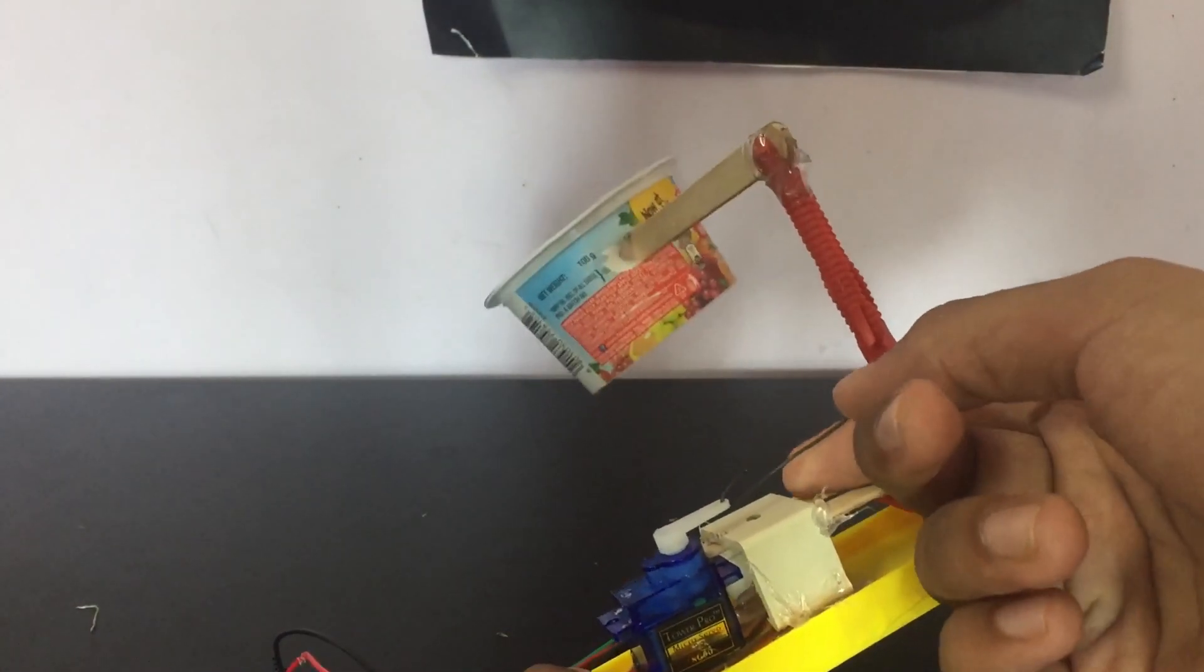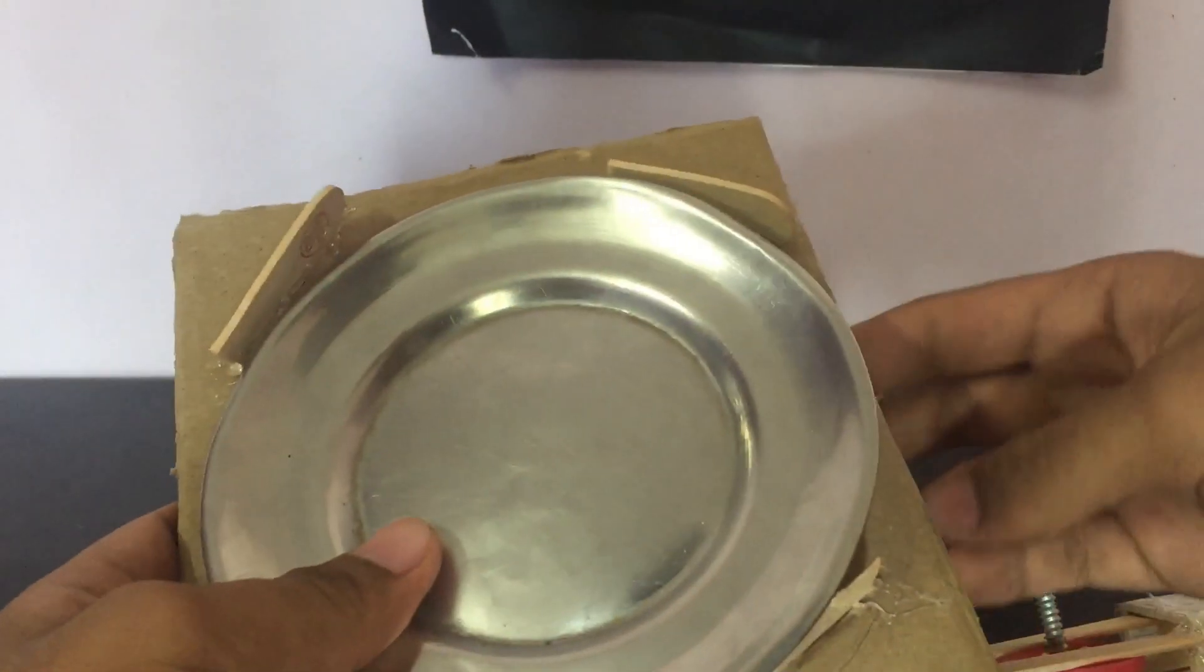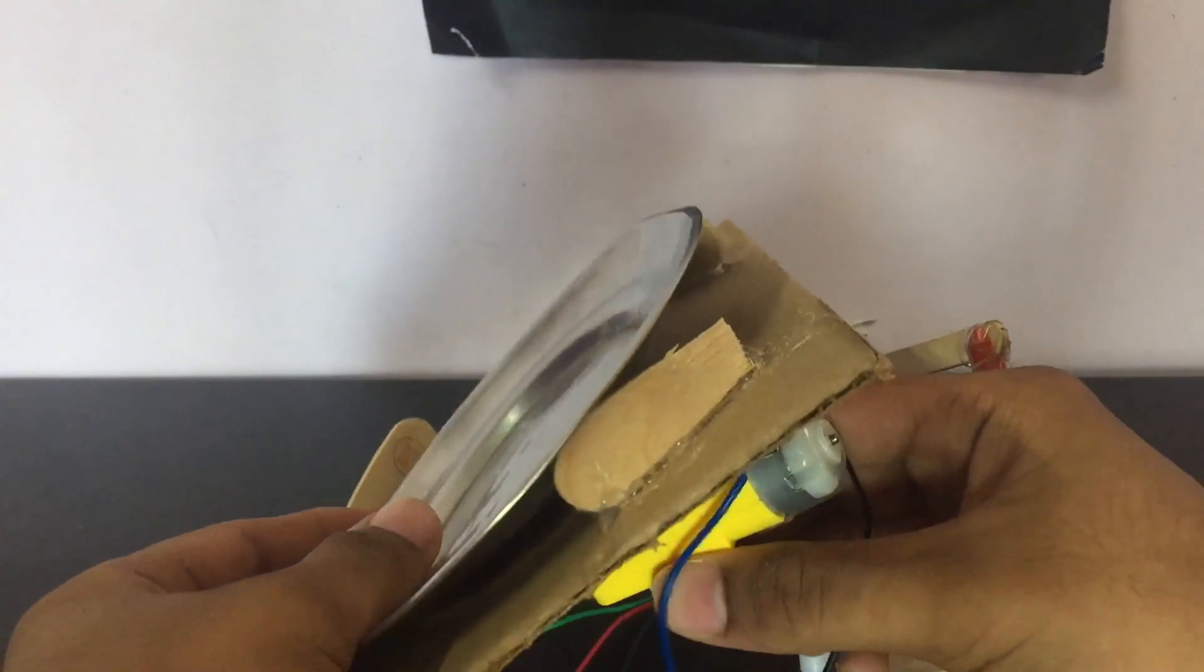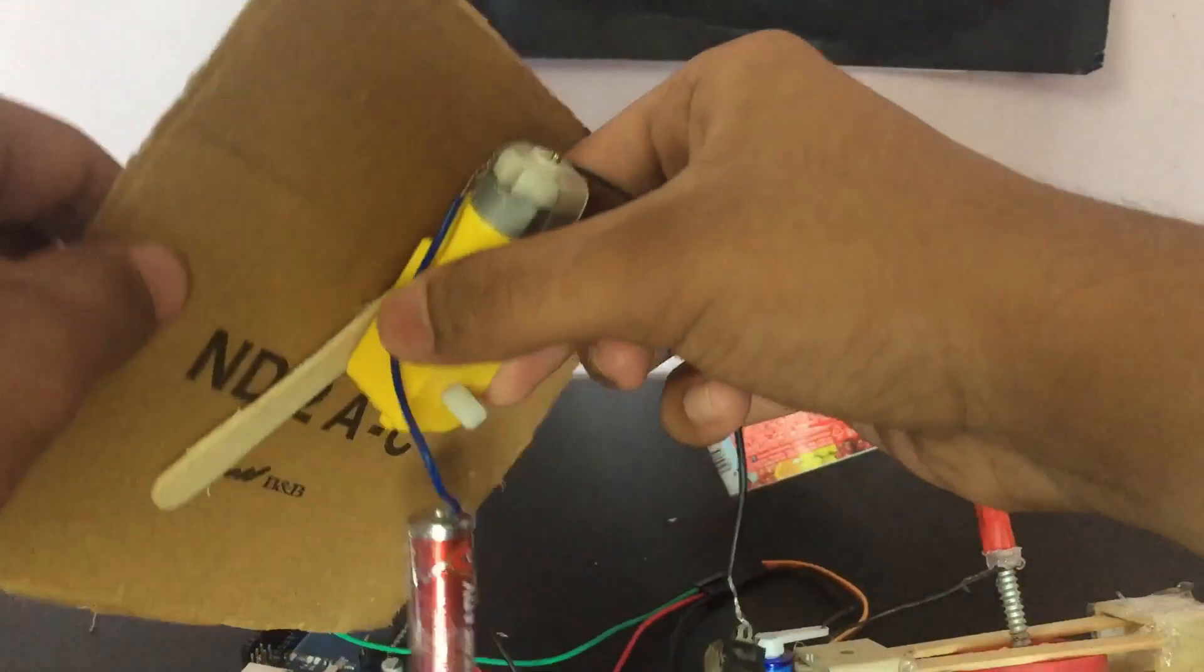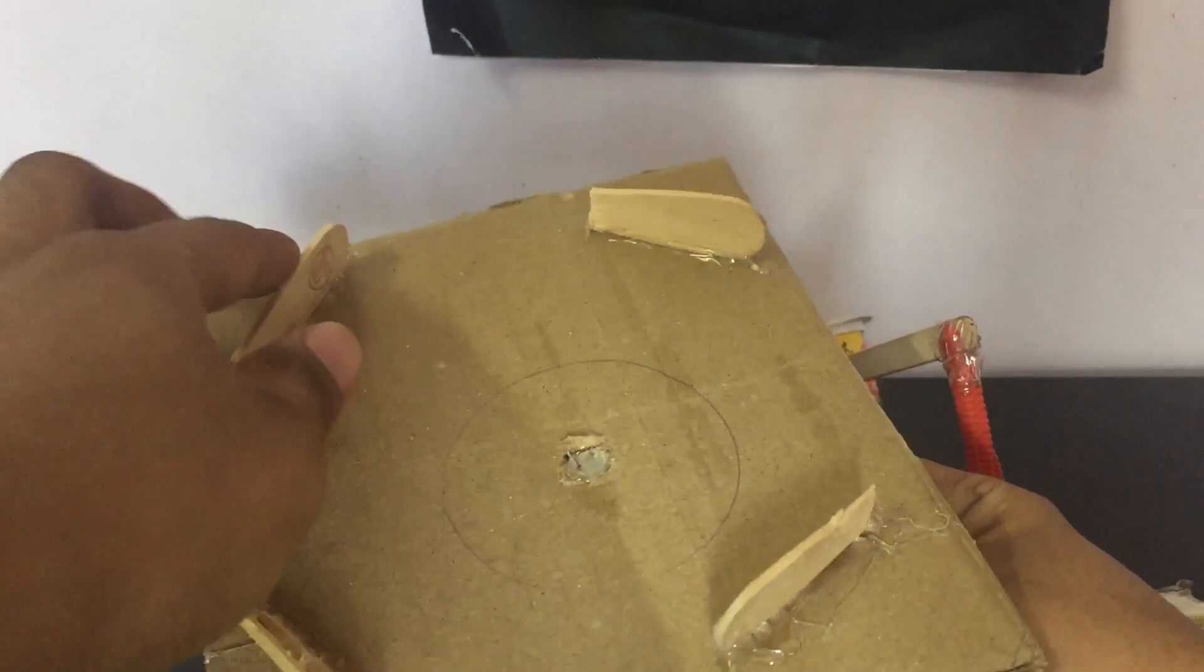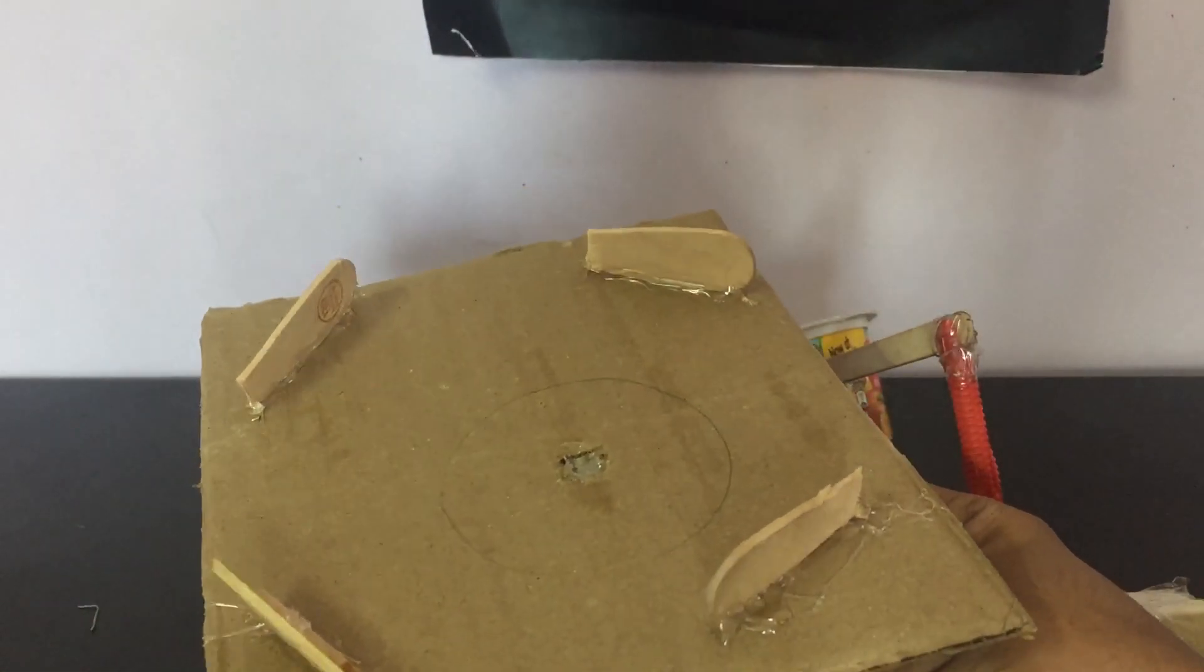Another mechanism which is the plate mechanism, it is very easy to make since there is only cardboard and motor attached to it. So I have put these ice cream sticks over here so that the plate won't fly away.